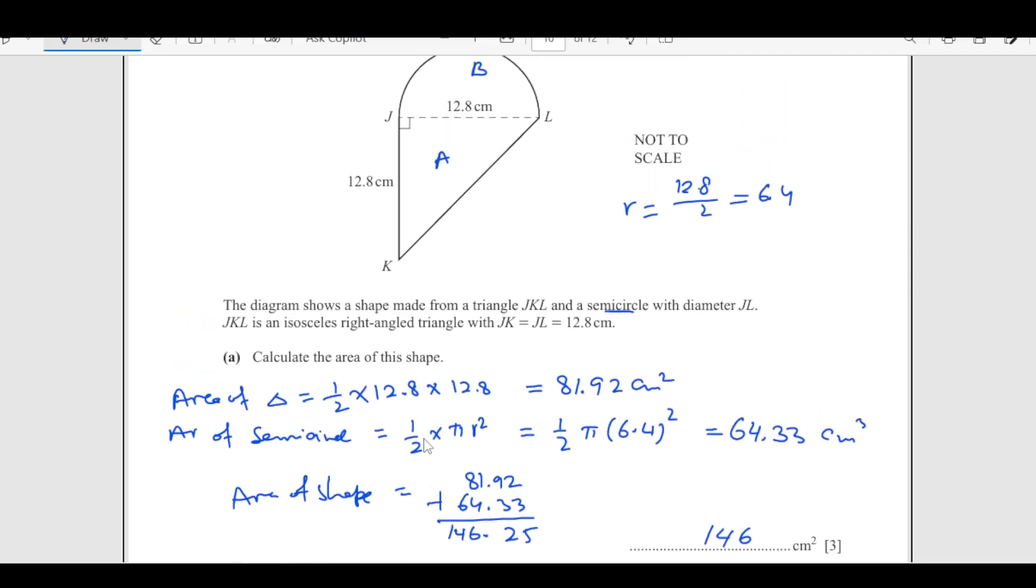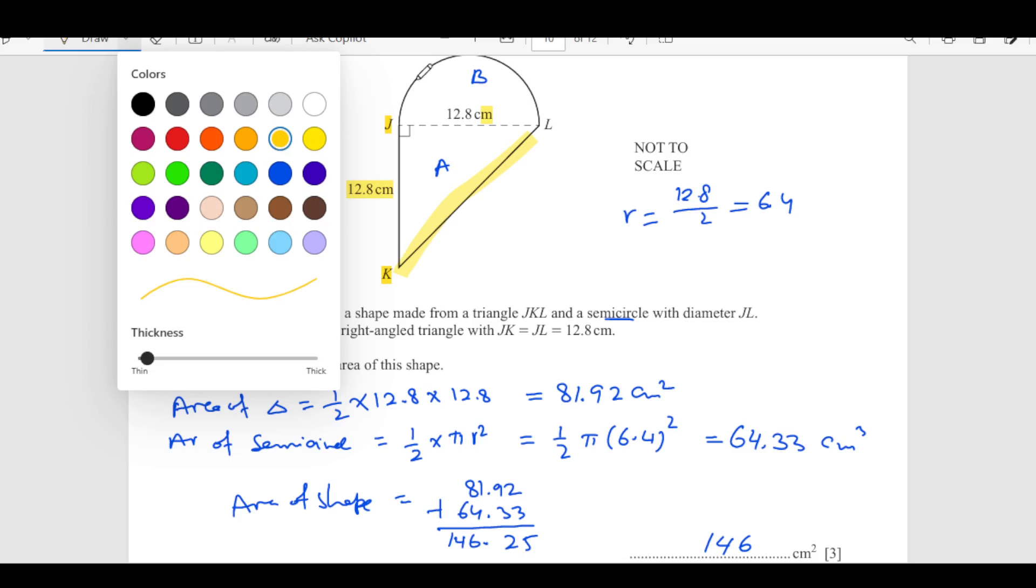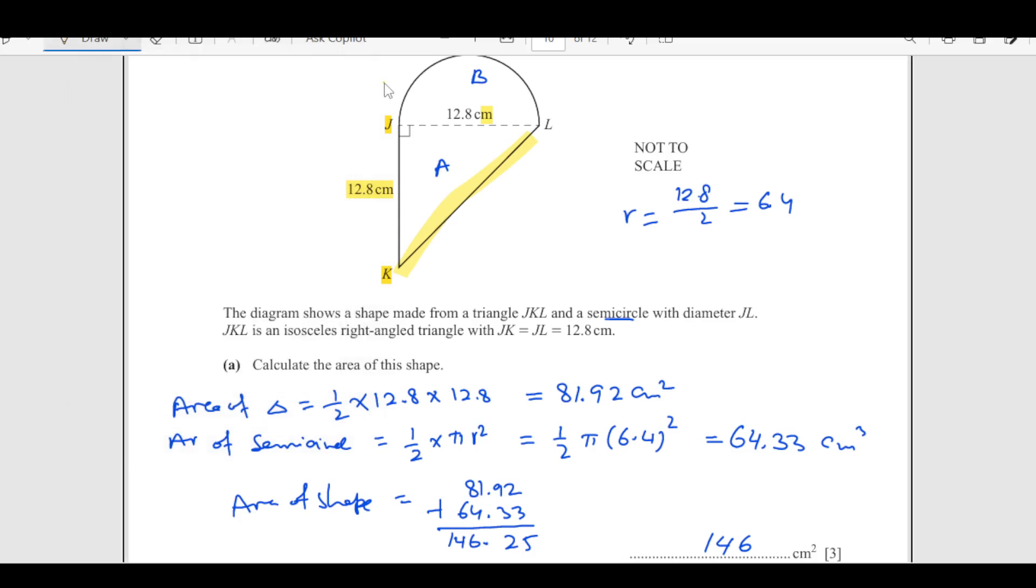Now calculate the perimeter of the shape. The perimeter of the shape means we are going to have all around the shape. So let me just use the pen here. So we are looking for this length, the shaded one and then we need to have this one plus this. So this we can find out from this triangle as this is the right angle triangle.